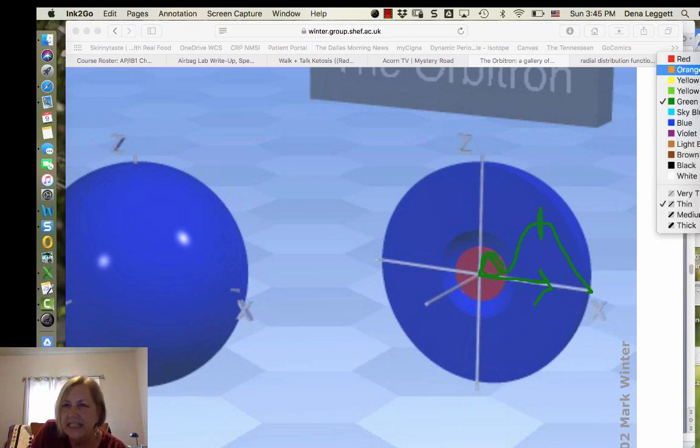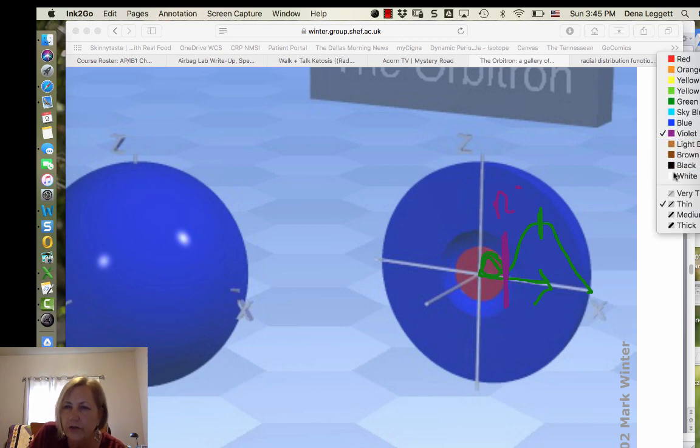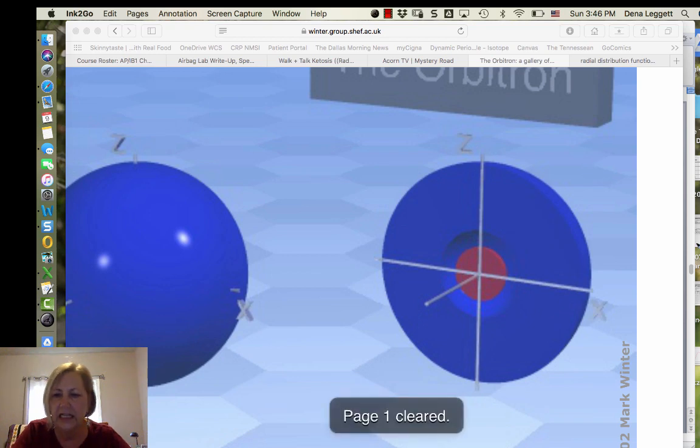But on average, the probability increases as you get further away from the nucleus. That sharp line right here, where there's a zero, it goes to zero, approaches zero, that's called a node.